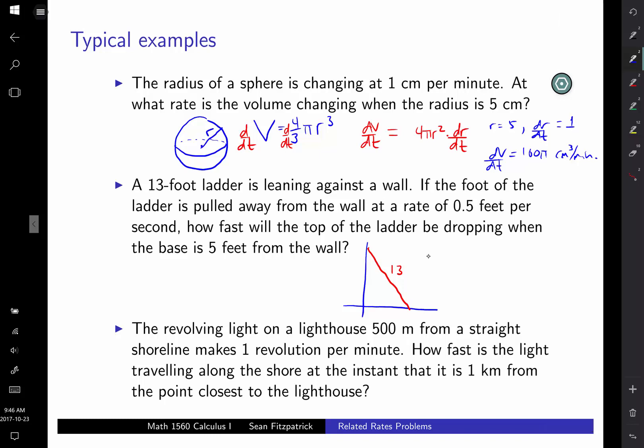I guess it could be like a telescoping ladder, but we're going to assume that the length of the ladder is fixed. And we look at what we're interested in the problem, and we're given the rate at which this quantity that I've labeled as x is changing. We're told how fast the bottom of the ladder is being pulled away from the wall, and we're interested in how fast the top of the ladder is dropping. So we're interested in how fast y is changing.